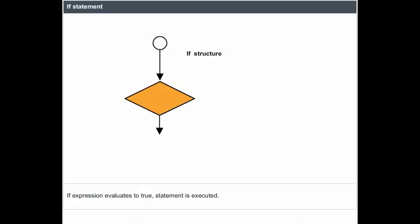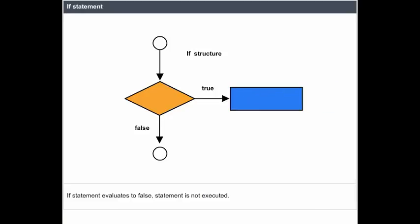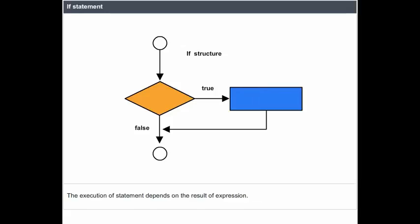If the expression evaluates to true, the statement is executed. If the expression evaluates to false, the statement is not executed. In either case, execution then passes to whatever code follows the if statement. The execution of the statement depends on the result of the expression.